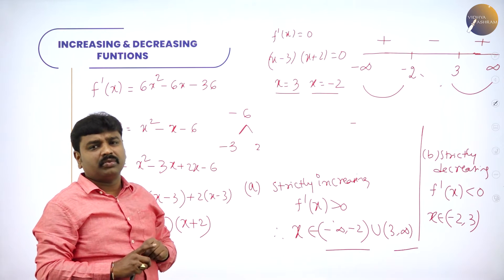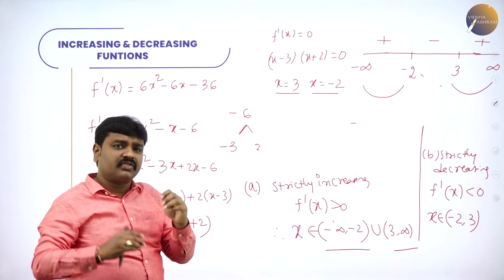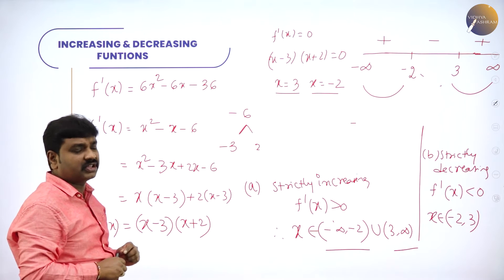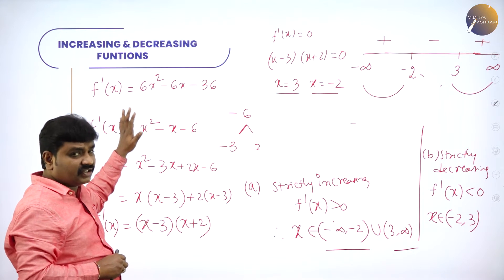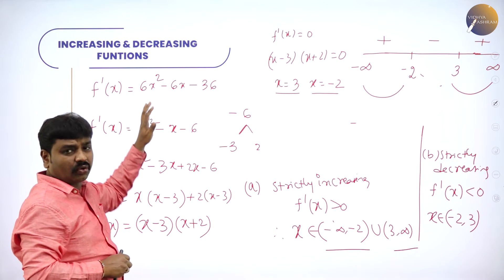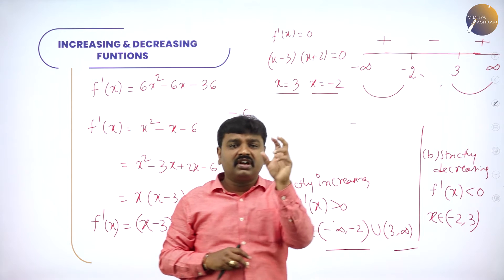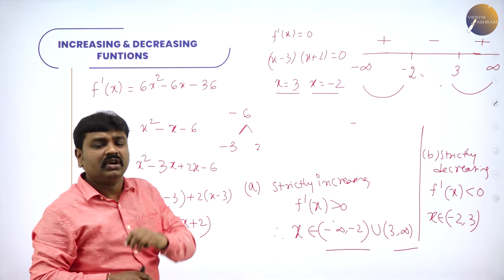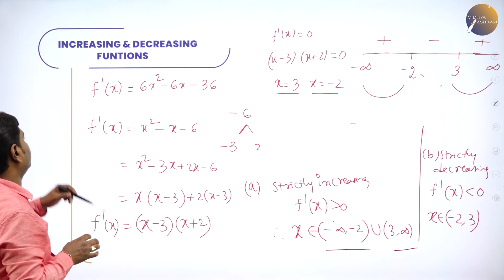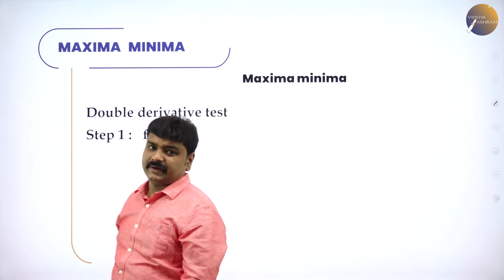In both problems we found the intervals where the function is strictly increasing and strictly decreasing. I taught you the wavy curve method: for f'(x) as a quadratic, factorize and find roots, write the roots on the number line, see where it is positive — that is strictly increasing — and where it is negative — that is strictly decreasing. Next we have the double derivative test.